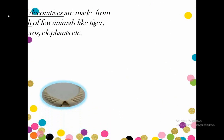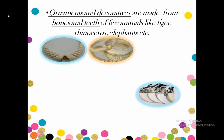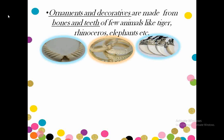Bones and teeth of a few animals like tiger, rhinoceros, deer, elephants, etc. are used to make ornaments and decoratives. Products made from elephant tusk — the long outer teeth of the elephant — are called ivory products. Today, ivory products have been restricted as people are deliberately killing elephants for them. But still, animals are hunted for their bones and teeth to make decoratives and ornaments.